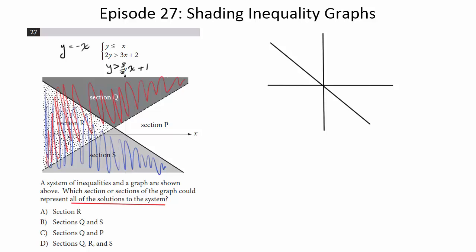So here we had a blue, here we had red, they both overlap here, I'll make it purple, in section R. You have both red and blue in this region. So the only region in this graph that satisfies both is section R. So choice A.